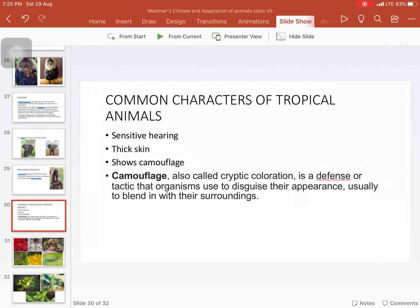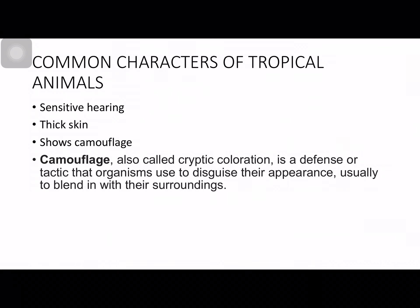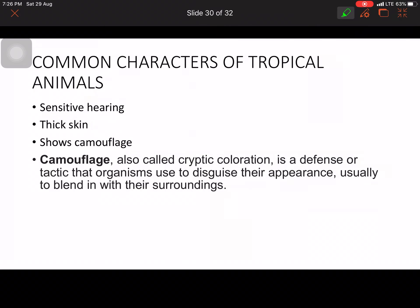What are the common characteristics of tropical rainforest animals? They have sensitive hearing, thick skin, and they show camouflage. Camouflage is a defensive tactic or cryptic coloration that animals use to disguise their appearance, usually to blend in with their surroundings. The best example is the chameleon — called 'girgit' in Hindi.